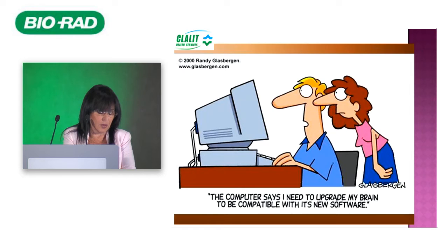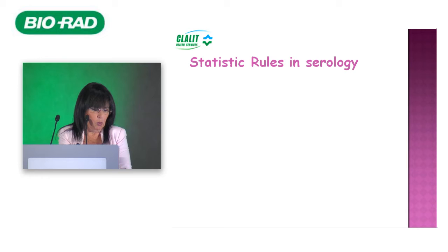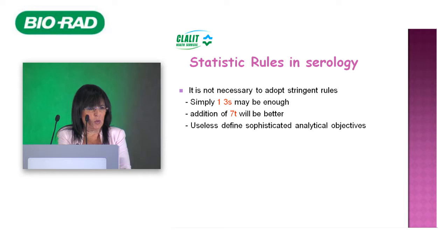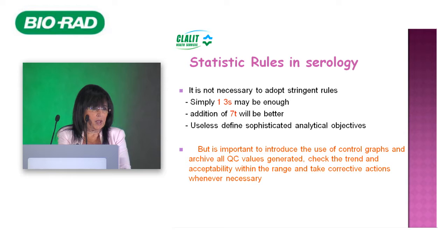In day-to-day work, we use the 1-3s rule as a stop rule and the 7-trend rule for most tests. Some tests use 1-2s or 2-2s, but most use the 1-3s and 7-trend. With a lot of data experience, we concluded there is no benefit to using very sophisticated rules. However, it is very important to run all controls, maintain all graphs, and archive all QC data — because retrospectively we gain a lot of information in serology and immunology.